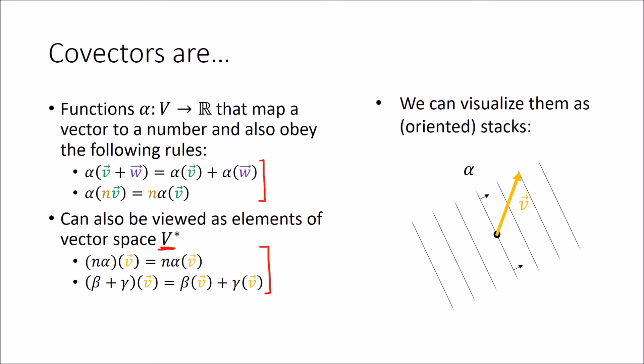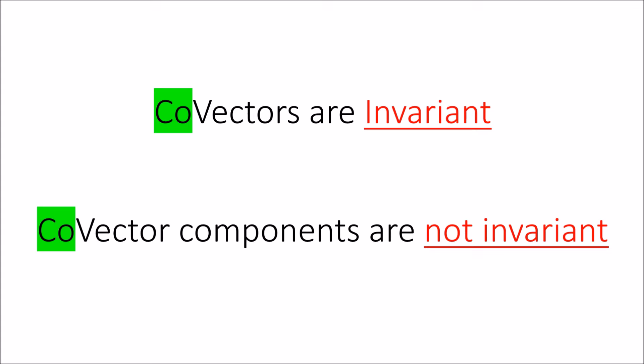I'd just like to pause here and state this in case it's not already obvious. Covectors, like vectors, are invariant. They are purely geometric objects and do not depend on a coordinate system. But covector components do depend on the coordinate system. A covector will be represented by different row vectors with different components depending on which coordinate system we're using.